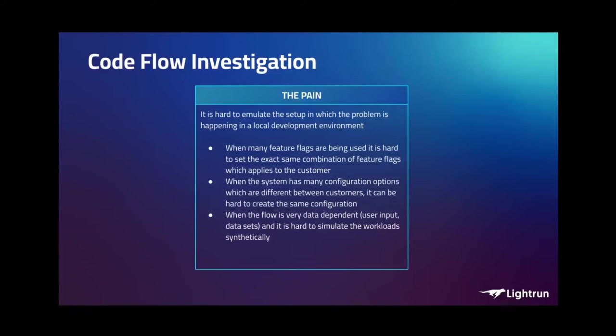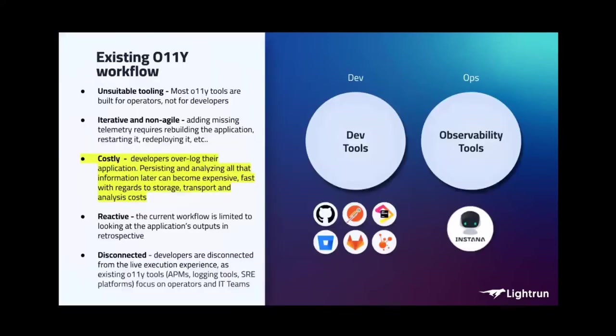Whenever you have an application that's very data-dependent and relies heavily on underlying data, it's less deterministic than simpler applications with simpler procedural flows. The main thing I want to show is that investigating where the code went and what path it took is not trivial. Instana has a bunch of features to help with that, and we at Lightrun have features to help with that on different levels of abstraction — and we'll talk about that now.